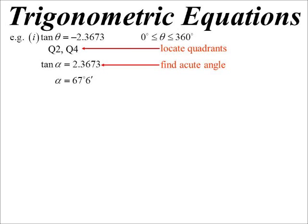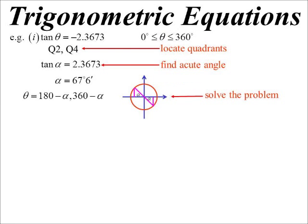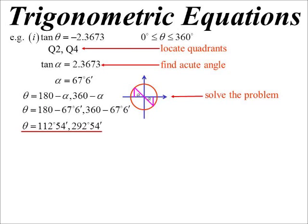And then we piece these two pieces of information together. Okay, the acute angle is 67.6. I like to draw myself up a little diagram and say, okay, well, if I'm in the second quadrant and the fourth quadrant, the acute angle goes to the horizontal, so I know I'm 180 minus the acute angle. I'm 360 minus the acute angle. So, subbing in, I can get my two answers. 112.54, 292.54.